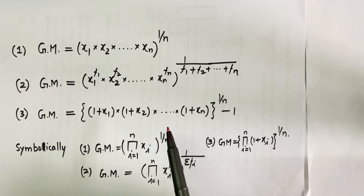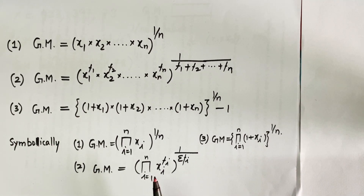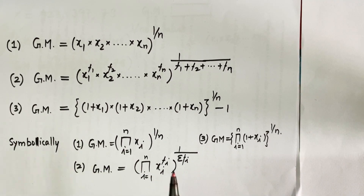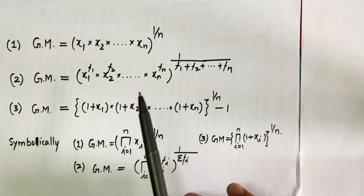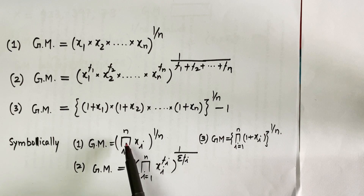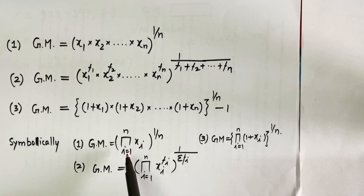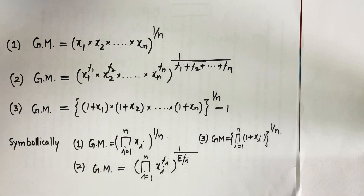In this video, I'll be discussing only the first formula - for ungrouped data. These are the symbolic mathematical representations: the first formula can be written as the product of x_i for i=1 to n, raised to the power 1/n. The second and third formulas are written similarly.